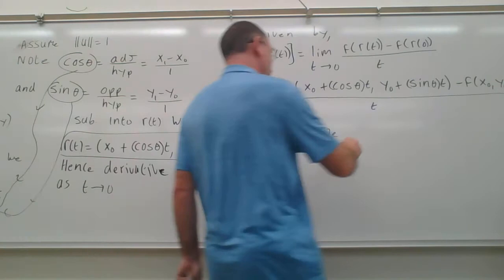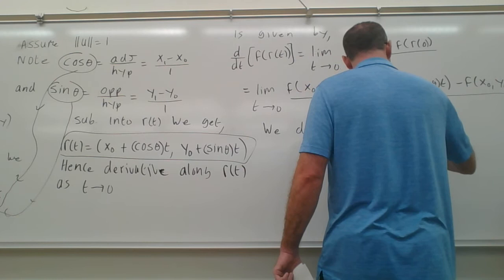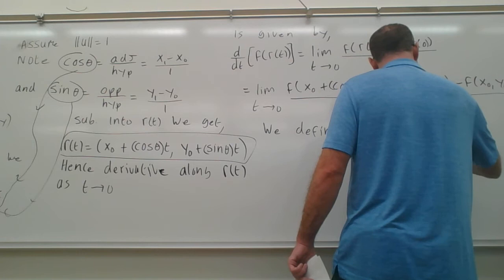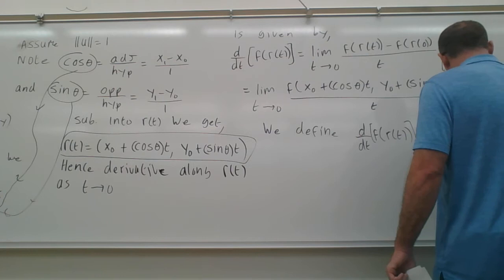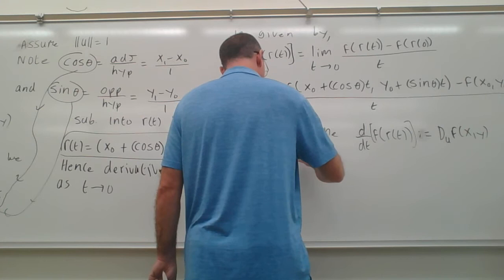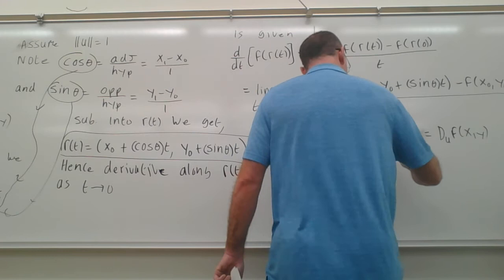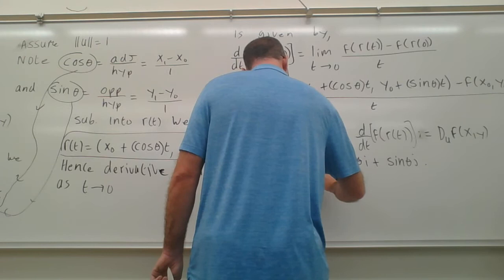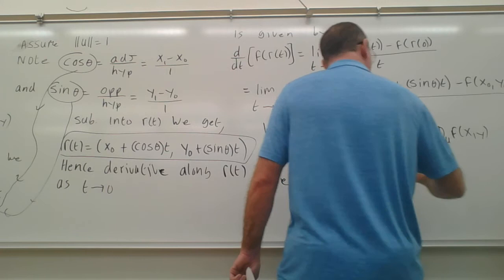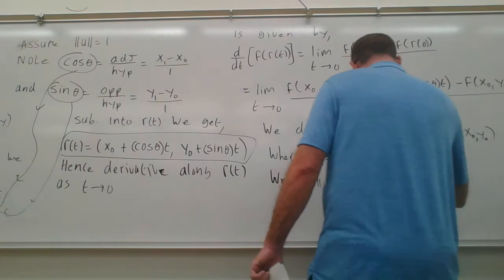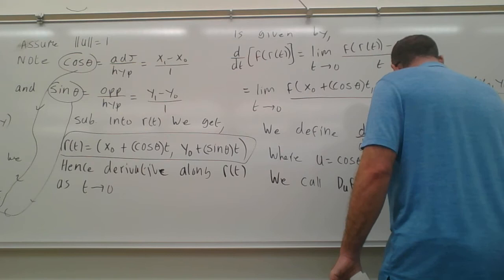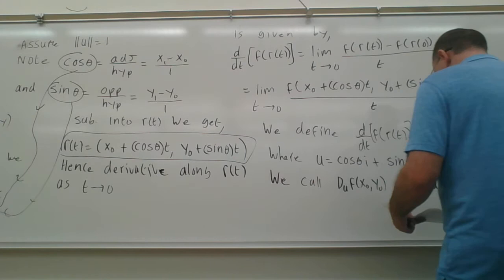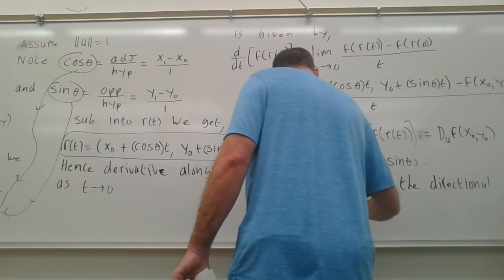We now make a definition. We define D_u f(x₀, y₀), where u = cos θ · i + sin θ · j, to be this derivative along our path. We call D_u f(x₀, y₀) the directional derivative of our function f.